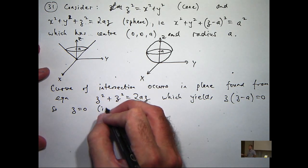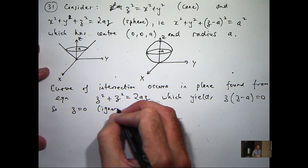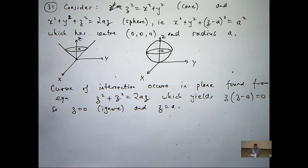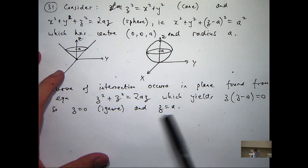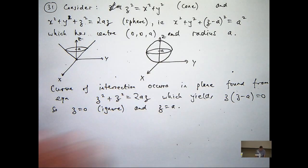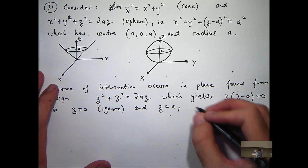So we'll ignore that one. Now in this plane z equals A, the curve of intersection is going to be x squared plus y squared equals A squared.